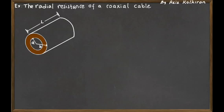When this radial current flows, it passes through a cross-section area in the shape of a cylinder — specifically the side area of a cylinder. The cross-section changes as you move outward, because the radius changes, which changes the circumference of the cylinder the current flows through. So we have a changing cross-section area.